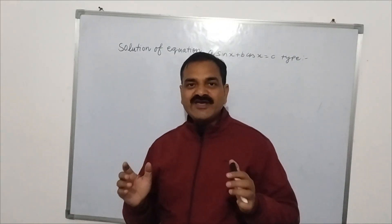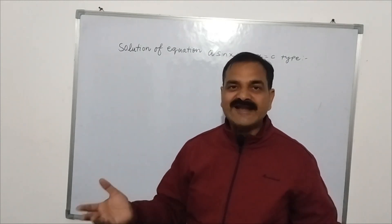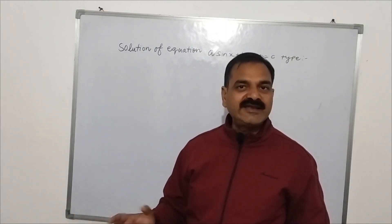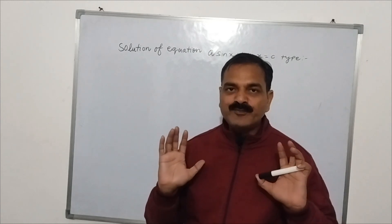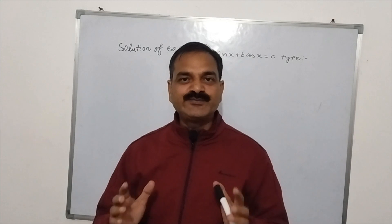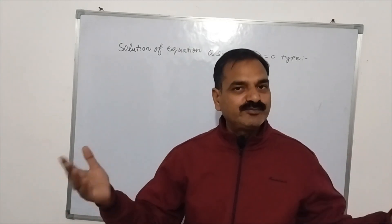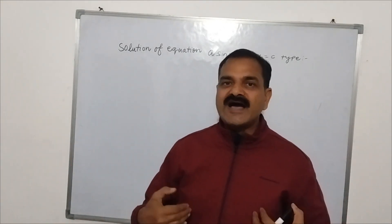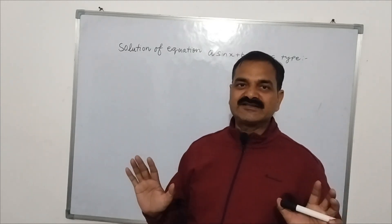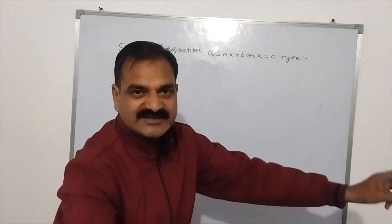Hello students. We are doing here general solution of equations of different types under the head trigonometric functions for class 11th. In the previous lecture, we tried to obtain the general solution of an equation of type A sin x plus B cos x equal to C by the method of squaring the equation on both sides. Today, I will try to solve the same equation by a different method.